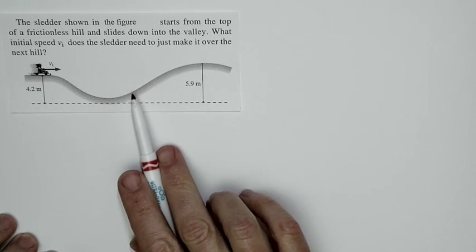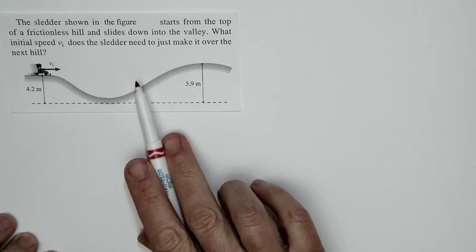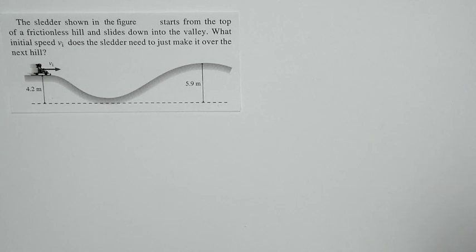Now, the sledder goes down the hill, loses gravitational potential energy, comes up here, and is clearly going to slow down. That's a question of conservation of energy. So we're going to treat this as a conservation of energy problem.